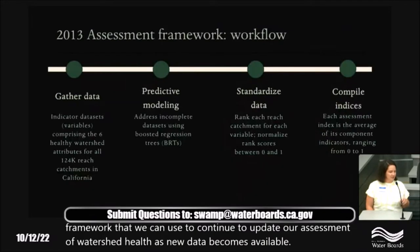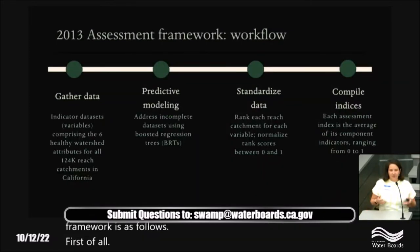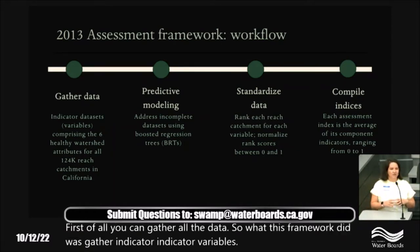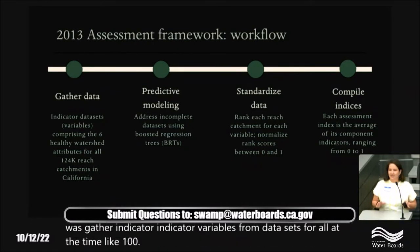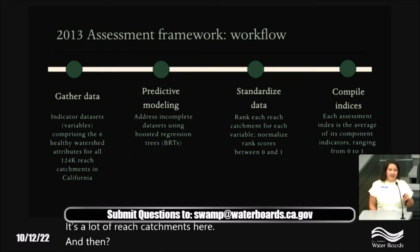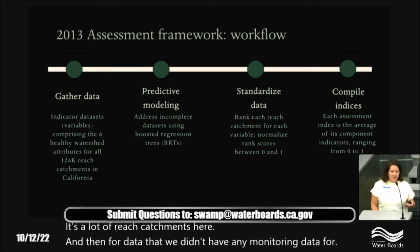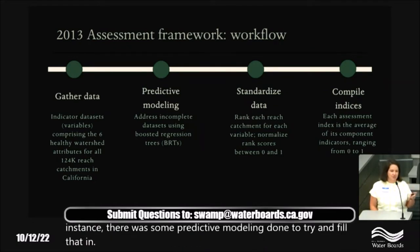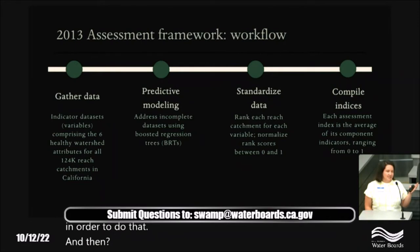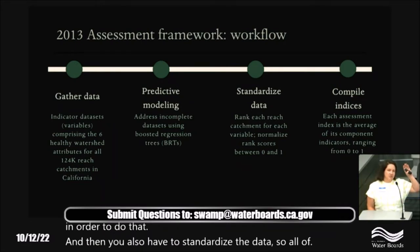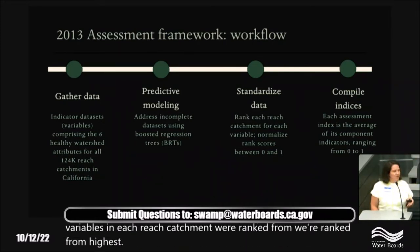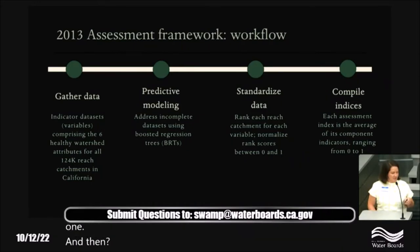The framework works as follows. First, you gather all the data — indicator variables from datasets for all 124,000 reach catchments in California. For data where there was no monitoring data, predictive modeling — specifically boosted regression trees — was used to fill gaps. Then you standardize the data: all variables for each reach catchment were ranked highest to lowest and standardized between zero and one. Those variables were then compiled into three different indices.